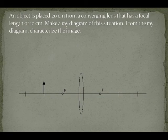To cross this bridge, you must answer a riddle. An object is placed 20 centimeters from a converging lens that has a focal length of 10 centimeters. Make a ray diagram of this situation. From the ray diagram, characterize the image.